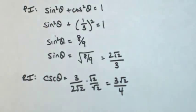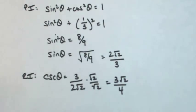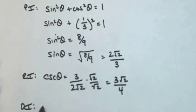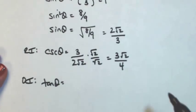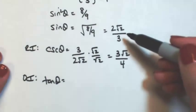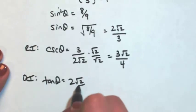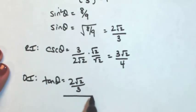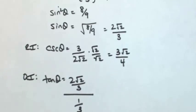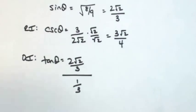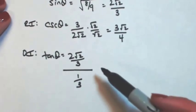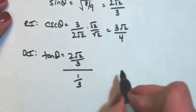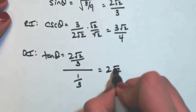One more set of functions to find — I need to know the tangent of theta. Since I know sine and cosine, I can use quotient identities now. The tangent of theta is sine over cosine. Sine we just found, cosine was given. Since I'm dividing top and bottom by the same thing, the threes cancel, so I get two square root of two.